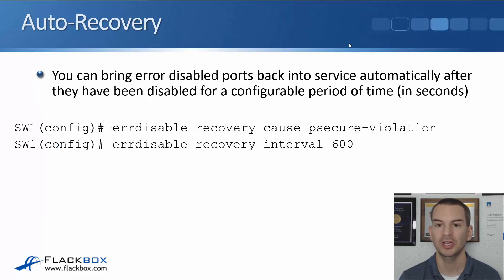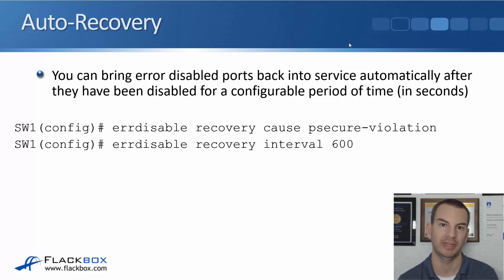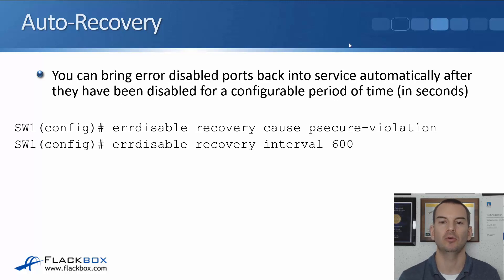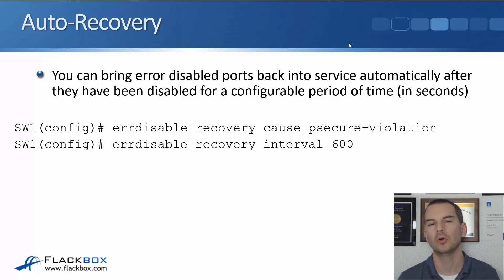You can also recover automatically. You can specify a time interval after which a port that has been error-disabled will automatically move back into service again. This is configured at the global config level: errdisable recovery cause psecure-violation. This means we will recover from an error-disabled interface if the cause was a port security violation. Then errdisable recovery interval 600 means that after it first goes error-disabled, after 600 seconds it will automatically come out of error-disabled and start forwarding traffic again. Obviously if the offending hosts are still there, it'll just go back into a violation state, so more commonly we would fix this manually with the shutdown and no shutdown.